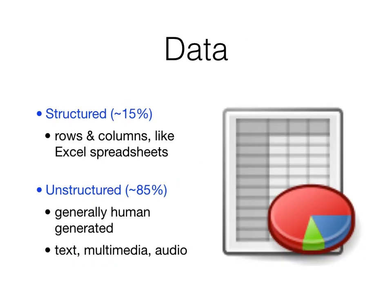The last thing I want to talk about is the different kinds of data, which we'll revisit later in the semester. We can divide data into two main types: structured data — essentially what you'd see in an Excel spreadsheet, with rows and the same number of columns, like a spreadsheet — and unstructured data, which is generally human-generated: text, multimedia, video, audio, or graphical content. We're really good at dealing with structured data, but unstructured data is more difficult. Unfortunately, unstructured data is the norm — only about 15% of the data we see is structured. Most of it's unstructured. I'll see you in the next lecture.